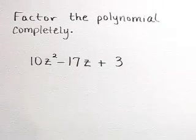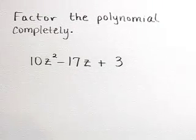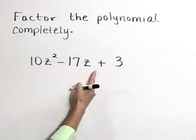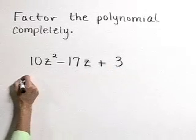Factor the polynomial completely: 10z squared minus 17z plus 3. If we could pull out a greatest common factor first, we would, but there isn't one in this case.